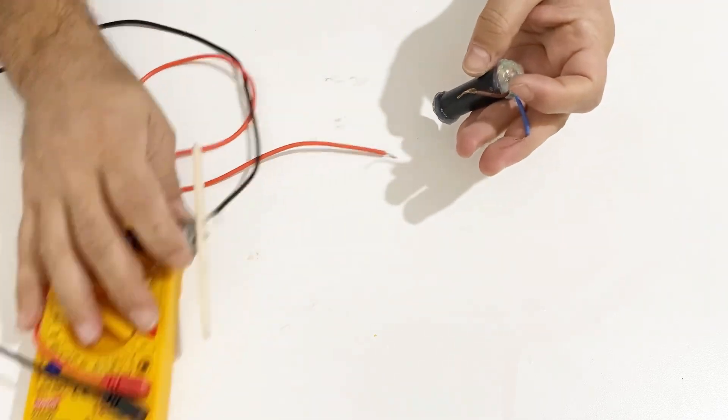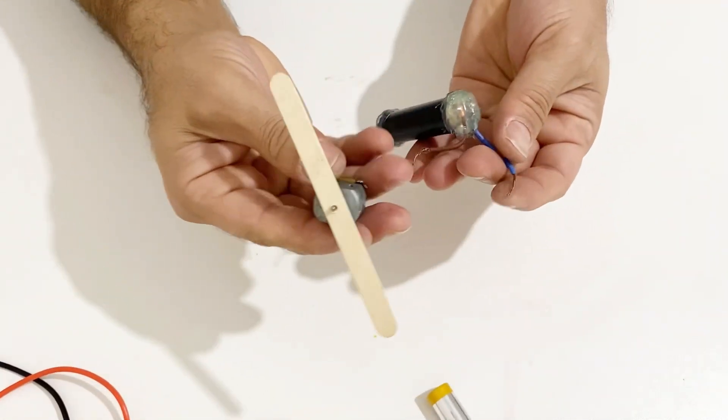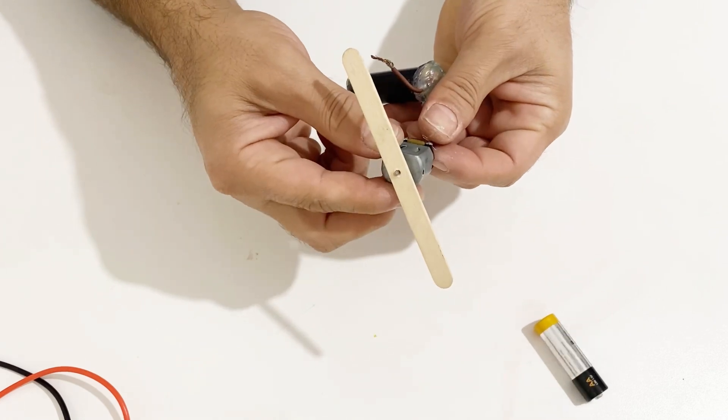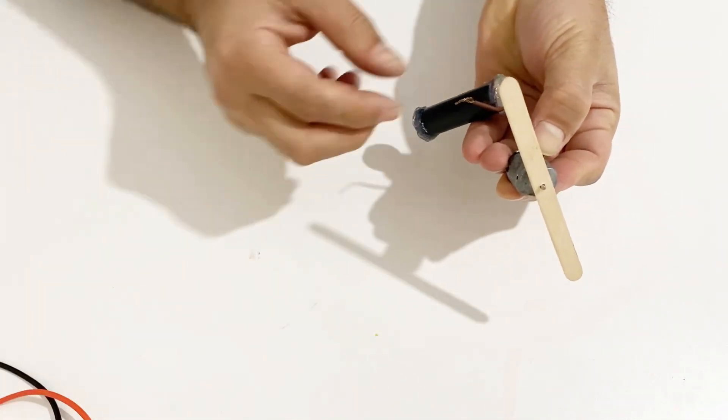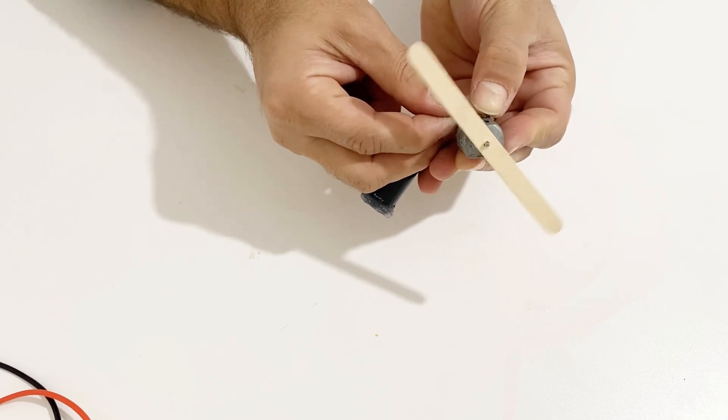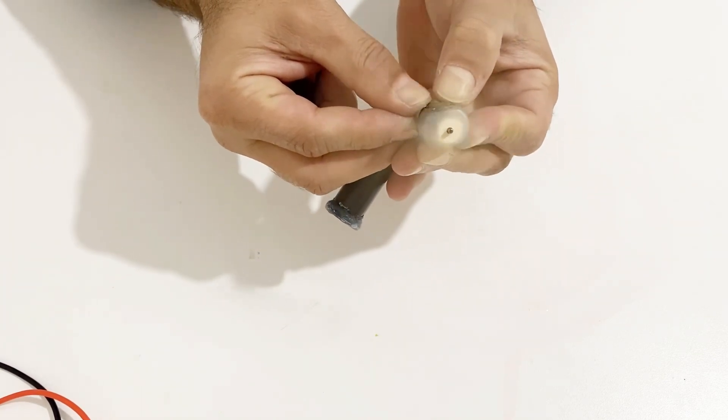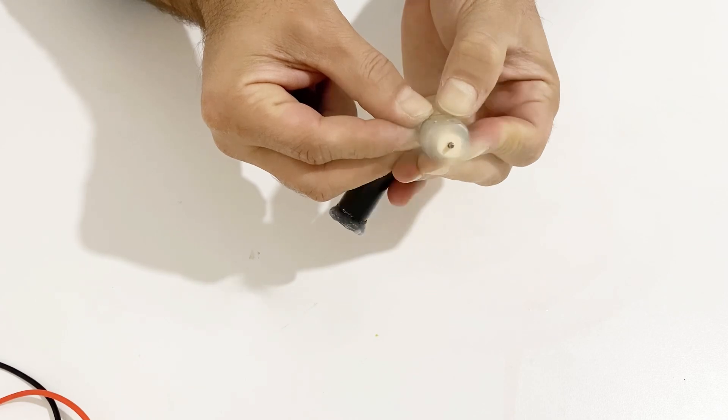Now I'm going to run this DC motor with my homemade supercapacitor. You see it can run this DC motor very fast.